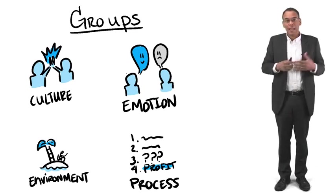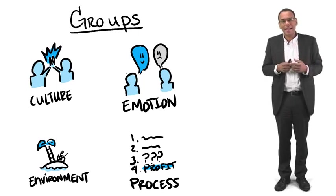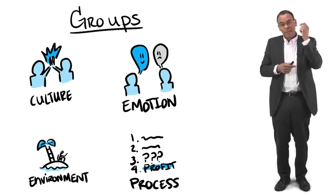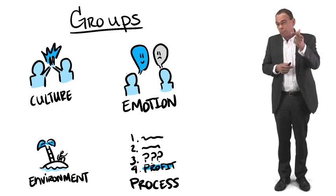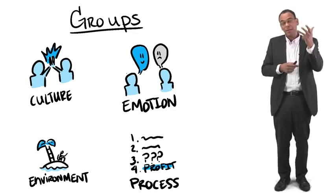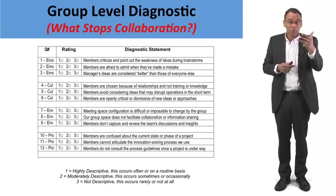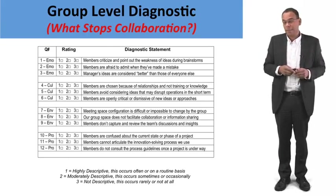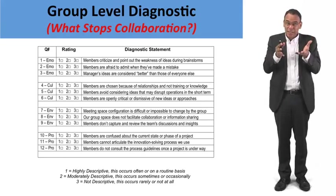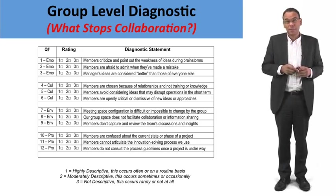Here are the kinds of questions you're going to have in the group diagnostic — the things we want to ask to understand: Is it emotion that's going to be problematic? Is it the environment? Is it the culture of the group? Or is it the process the group uses to get through the innovation that's going to be problematic? If we can isolate which of these constraints is going to affect us, we're much more likely to become successful.